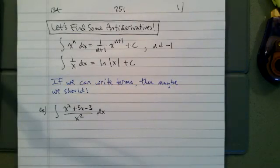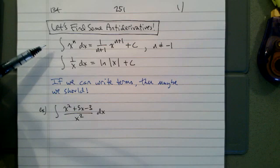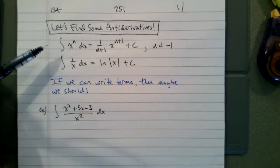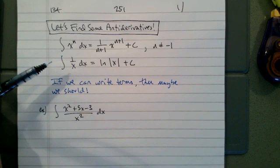Today, if Zoom will cooperate, we're going to find some antiderivatives, and I want to focus on the big rule: add one to the exponent, divide by the new exponent, and also the integral of one over x dx is natural log of absolute value of x plus c.